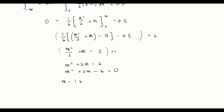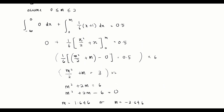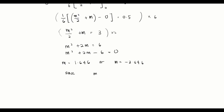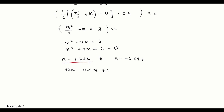Solving the quadratic gives m = 1.646 or m = −3.646. Since we assumed m is in [0, 2], and −3.646 is outside this range, the valid solution is m = 1.646. Therefore, the median is 1.646.